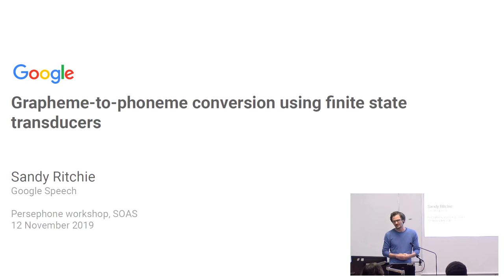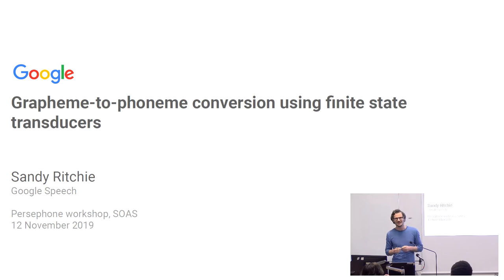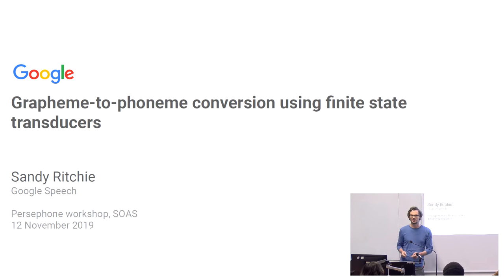Today I thought it would be interesting to complement the talks about Persephone with a talk about another aspect of speech recognition which is complementary and would work very well in tandem with Persephone in certain situations. I'm going to talk about Grapheme to Phoneme Conversion, which is the process of changing spellings into phonemic transcriptions, using finite state transducers, which are a type of grammar or machine grammar which you can use to convert from spellings to pronunciations.